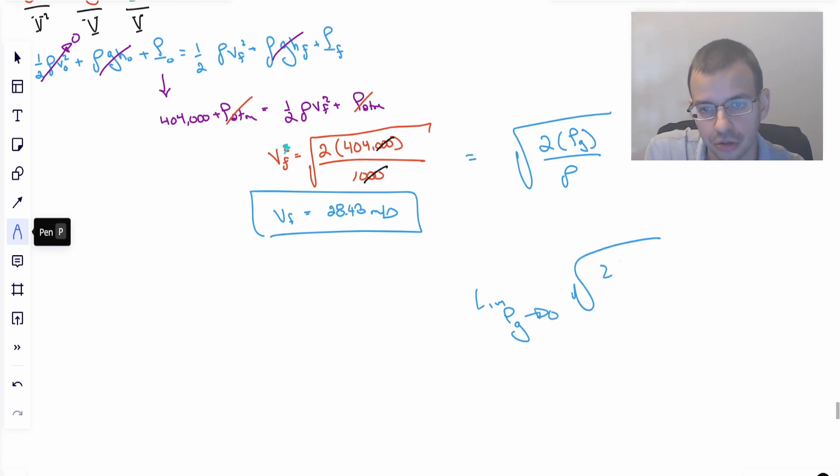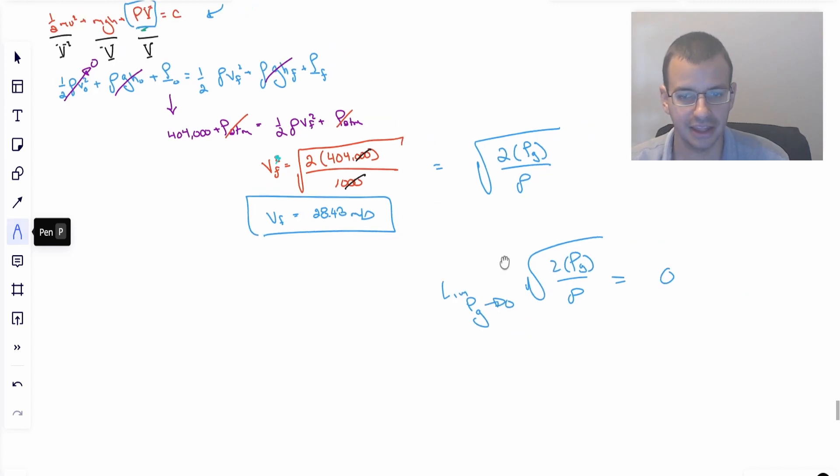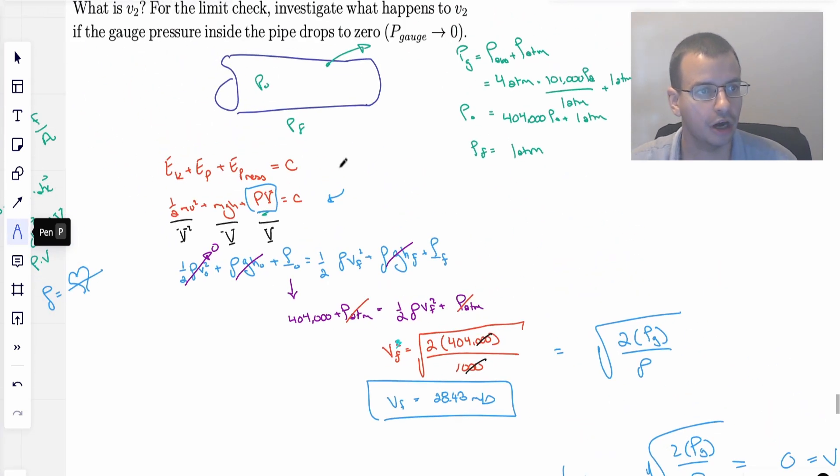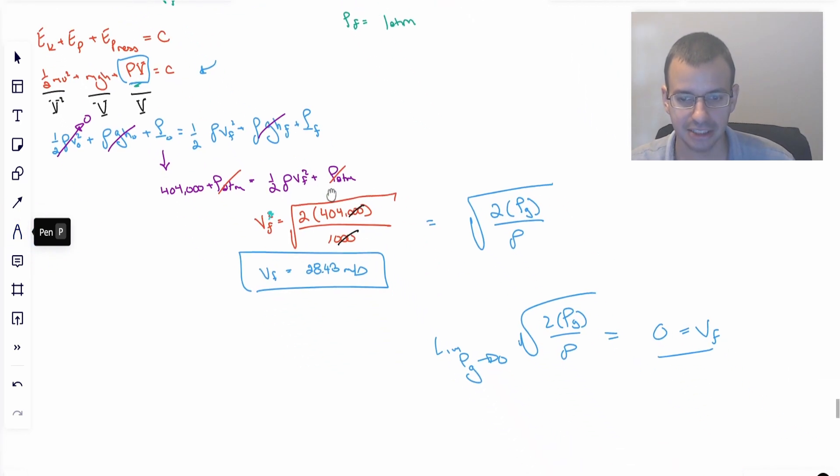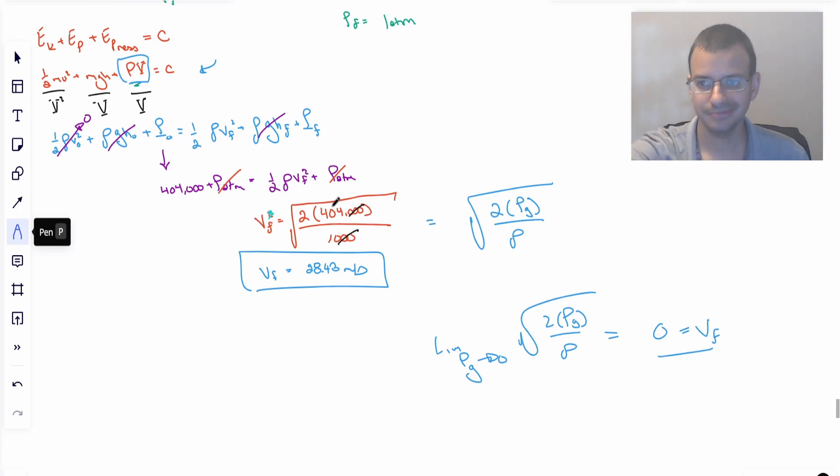When we plug in zero up there, that equals zero. And that makes sense. And that's going to be equal to velocity final. So the idea then is for our limiting situation, our limit check, if you have a pipe without any pressure in it and you get a hole in it, water's not going to shoot out, which feels intuitively correct and is mathematically consistent with what we do. So I hope that helped. See you next time.